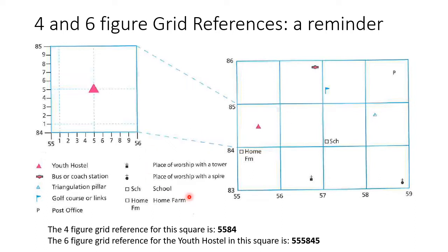To work out a four figure grid reference, the rhyme we always use is along the corridor and up the stairs. So you go along the corridor — watch my pointer — and if we're looking for the grid reference for the youth hostel here, we go along the corridor and stop when we reach this square. We stop here and read the number: 55. We write that down. We then go up the stairs, and as soon as we get to the square that the symbol is in, we stop. We read that line: 84. So here's your answer: 5584. Really easy.